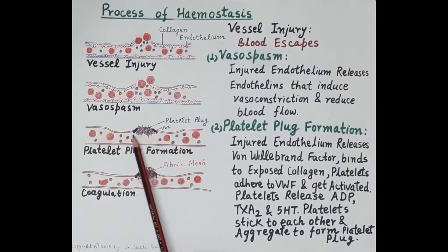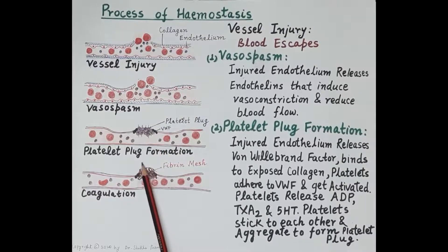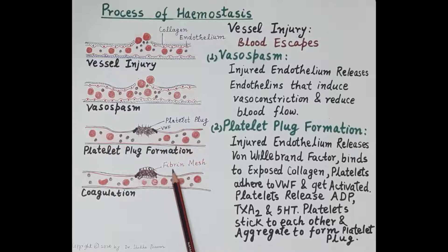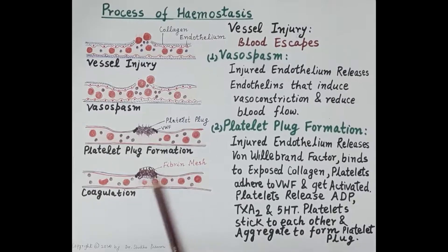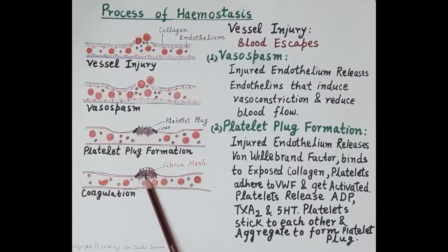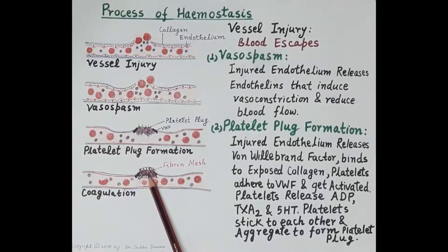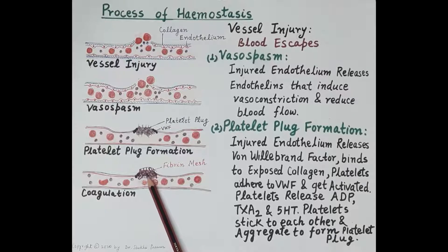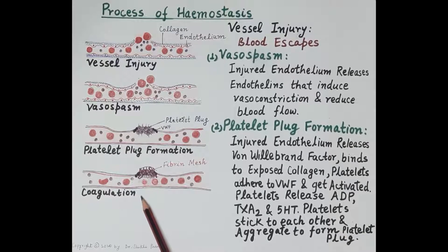These chemicals further stimulate platelet aggregation — the platelets stick to each other and form the platelet plug. This platelet plug is weak, but it temporarily seals the injured site in the wall of the blood vessel. Platelet plug formation is followed by coagulation — the formation of a clot. A fibrin mesh network is produced and laid over the platelet plug, trapping platelets, blood cells, and plasma proteins to form the clot, which seals the injured site. This process is termed secondary hemostasis.